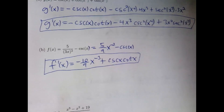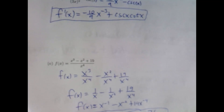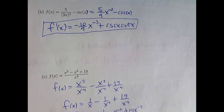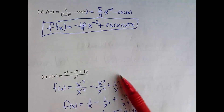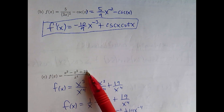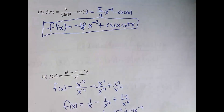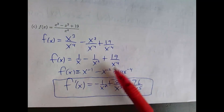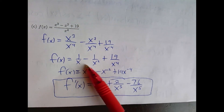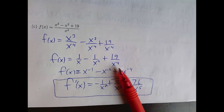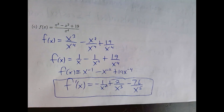There's one more on the first page — another one where you want to avoid the quotient rule. First you rewrite it: x cubed over x to the fourth, x squared over x to the fourth, 19 over x to the fourth. Then you clean it up, bring everything upstairs, and take the derivatives. And there you have it — that's the first page of this test.